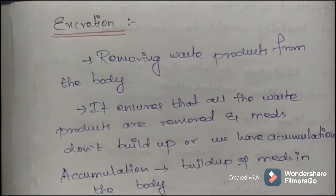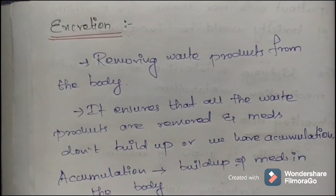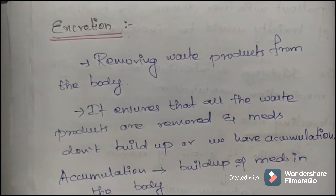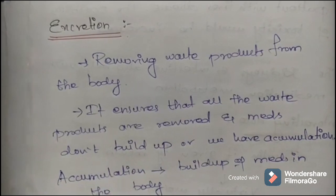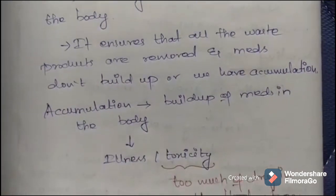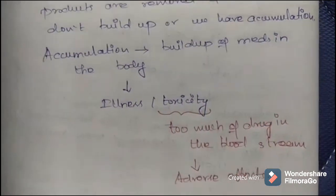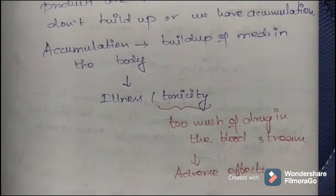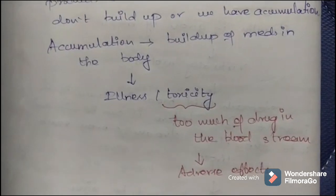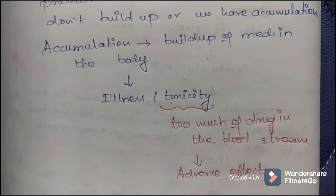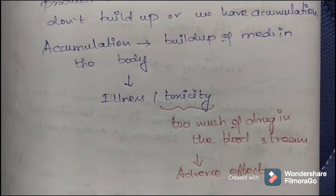The last phase of pharmacokinetics is excretion — the removal of waste products from the body, carried out by the kidneys. It ensures all waste products are removed so medications don't build up. Accumulation refers to the buildup of medication in the body, which can lead to illness or toxicity. Toxicity — too much drug in the bloodstream — causes adverse effects. That's all about pharmacokinetics; I'll discuss pharmacodynamics in my next video. If you find this video helpful, please follow my channel. Thank you for watching, have a good day.